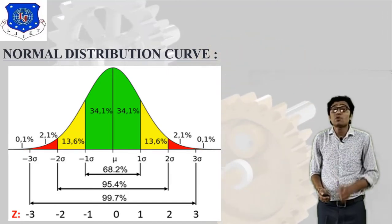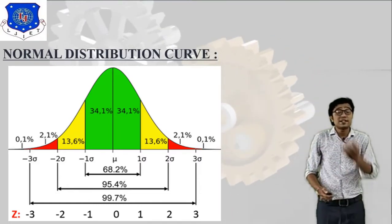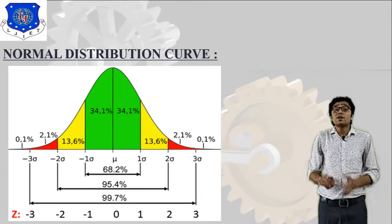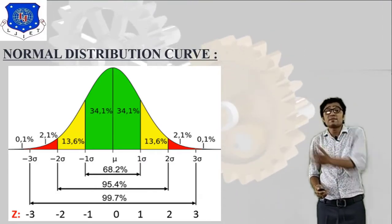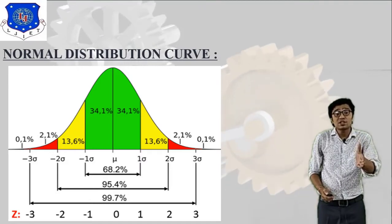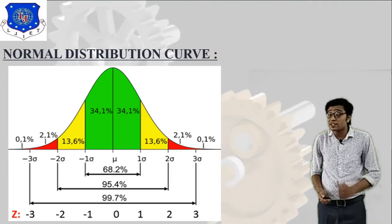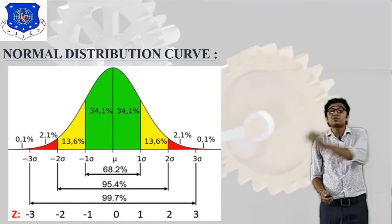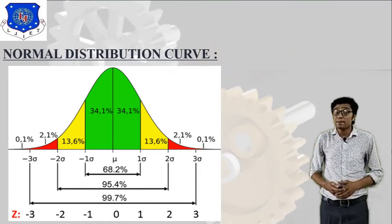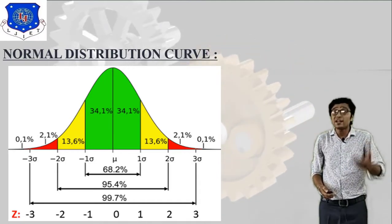So the overall distance between minus three sigma and plus three sigma percentage-wise is 99.7%. This is the six sigma concept. To summarize: minus one sigma to one sigma is 68.2%; minus two sigma to two sigma is 95.4%; and minus three sigma to three sigma is 99.7%.